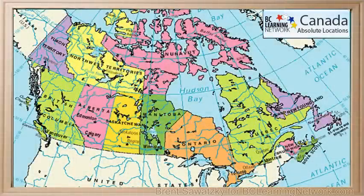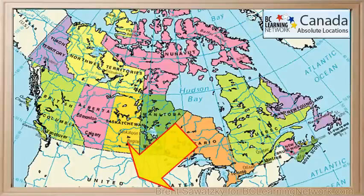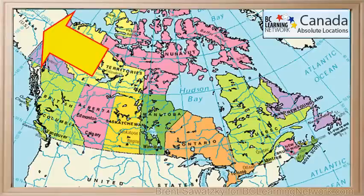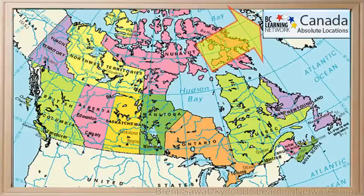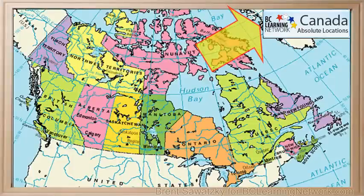So first, Canada's relative location. We're north of the majority of the United States, but we're southeast of Alaska up here, which is also part of the United States, and we're southwest of Greenland, which is over here and it's its own country.